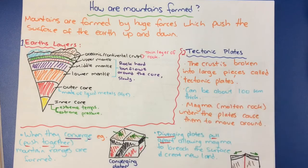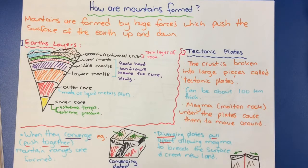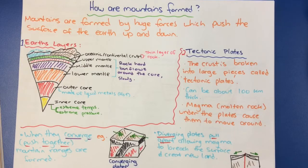Tectonic plates — let's talk about that. The crust is broken into large pieces called tectonic plates. They can be about 100km thick. Magma, which is molten rock, under those plates causes them to move around. They can move in a number of ways — we're going to talk about two of those today.